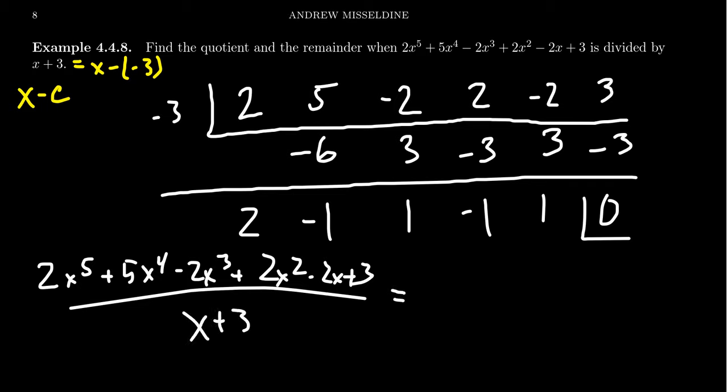This will give us our quotient, which the quotient will always have one degree smaller than what we started with. So we get 2x to the 4th minus x cubed plus x squared minus x plus 1. And then you add the remainder of 0, which there's nothing to add here.